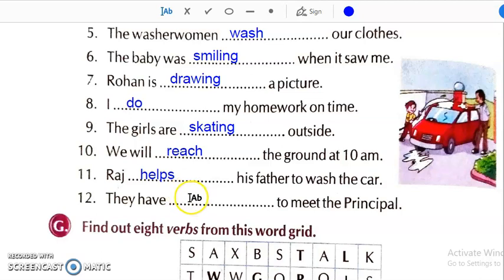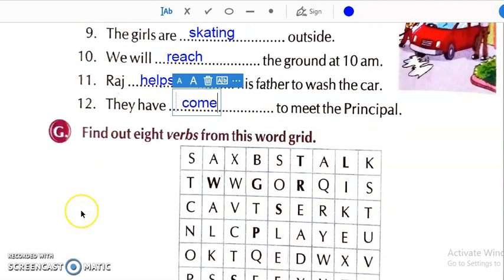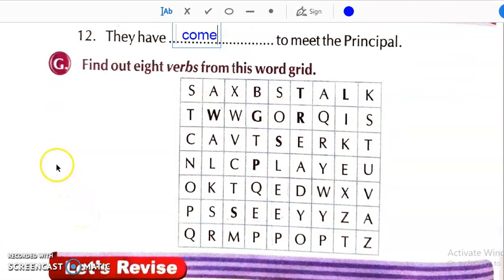Then, last one. They have dash to meet the principal. They have come to meet principal. So, I hope all of you understood in this chapter verbs or you can say doing words. These exercises you have to write in the textbook. And yes, one more question is here. This question you will do by yourself.